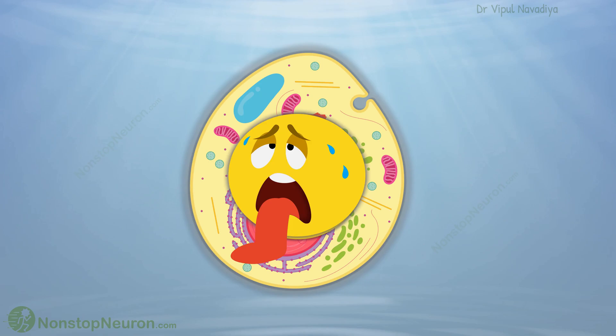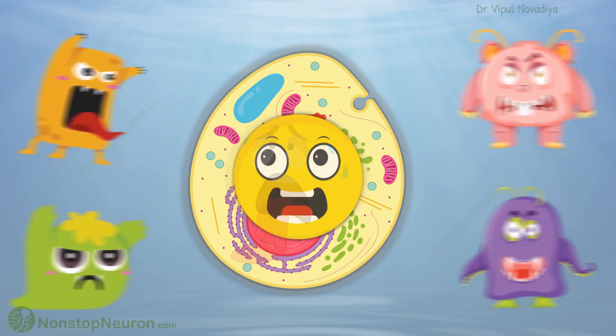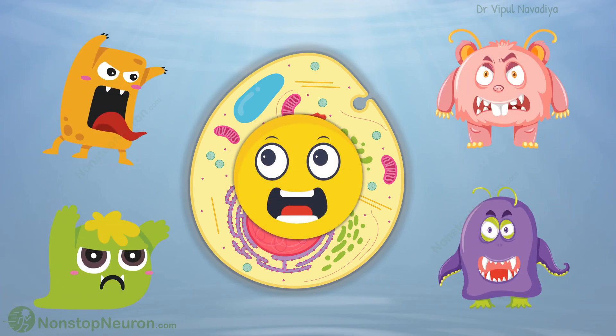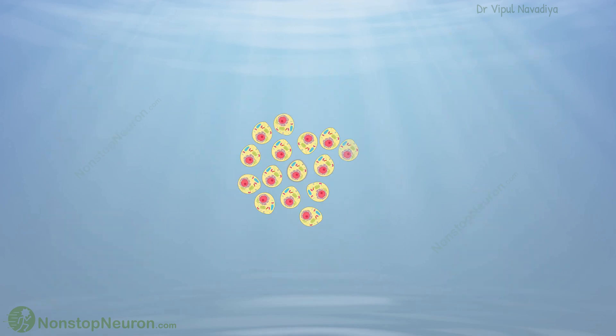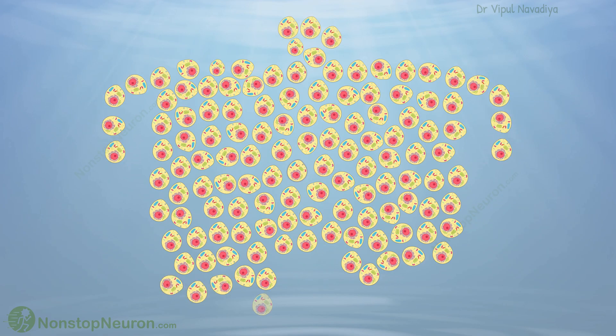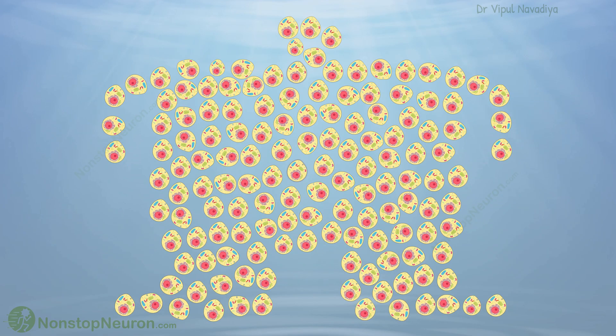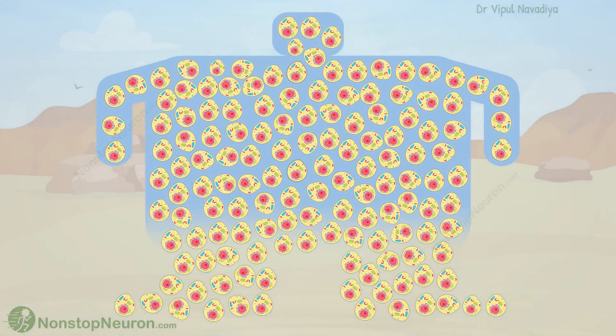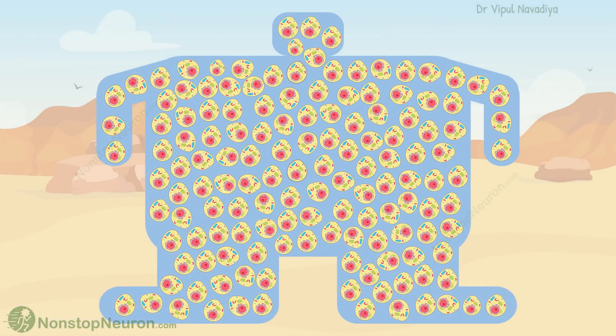The problem with the unicellular form was that it needed to do all the work on its own, and also it was very vulnerable to the hostile environment. As a solution, multiple cells started teaming up, forming a multicellular organism. And eventually, life evolved into what we are today, over the period of millions of years. Now let's understand what happened during all these years, in a simplified way.